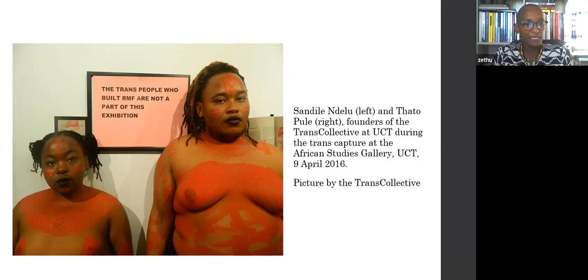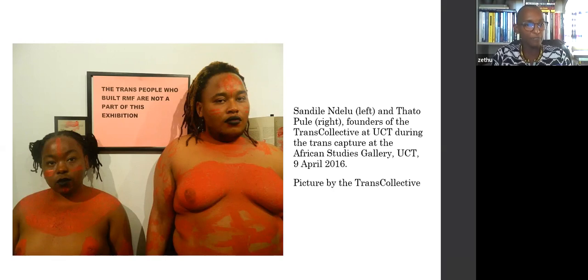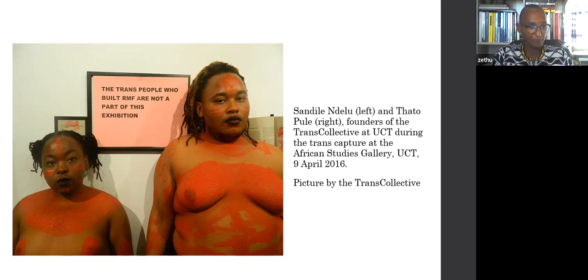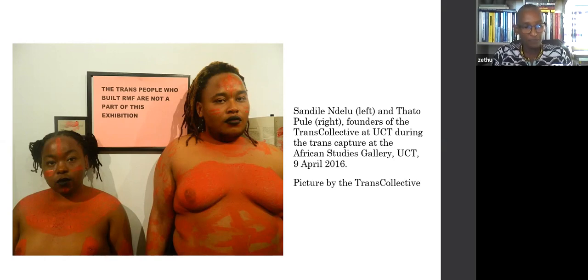The trans collective arrived at the site of the exhibition opening, mostly naked and painted with red body paint. There were six of them. They halted the exhibition opening, explained their protest on the erasure of transgender students, and laid down across the gallery, blocking the entrance. The symbolism was overwhelming — only those brave enough to walk over trans bodies dared to enter. Dubbed the 'trans capture,' the intervention highlighted the pervasive nature of tokenism, which infiltrates even progressive movements such as Rhodes Must Fall. For the trans collective, their presence, visibility, and labor could not be reduced to a few tokenistic photographs in an exhibition. They also challenged the curatorial approach, highlighting the exclusion of trans diverse voices.